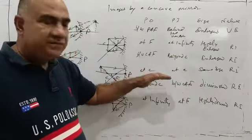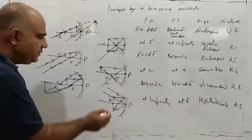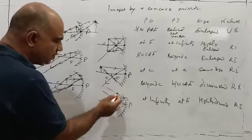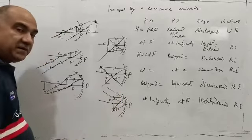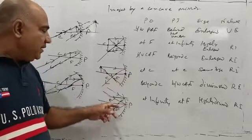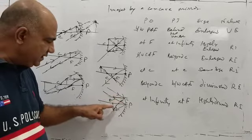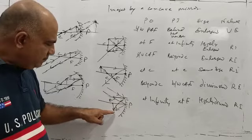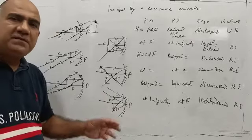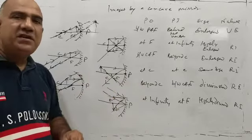When the object is kept beyond C, the image will start getting diminished. For the last position, the object is kept at infinity, so the incoming light rays from the object are parallel to each other — not parallel to the principal axis, but parallel to each other. At two points on the surface of the mirror, the incident rays are reflected and after reflection they meet at a point lying exactly below the principal focus. So the image is formed at the principal focus when the object is at infinity. The size is highly diminished and it is real and inverted.